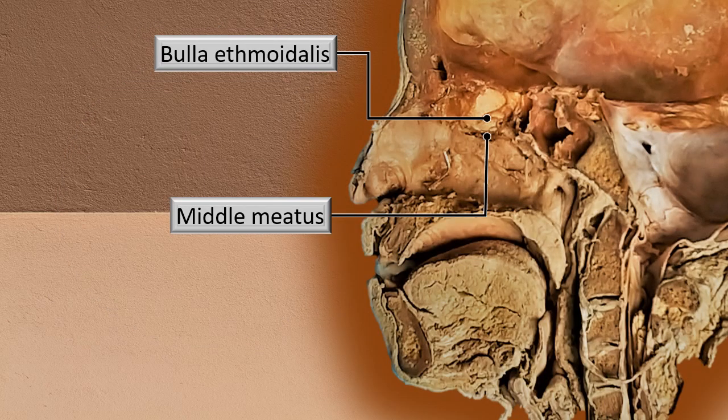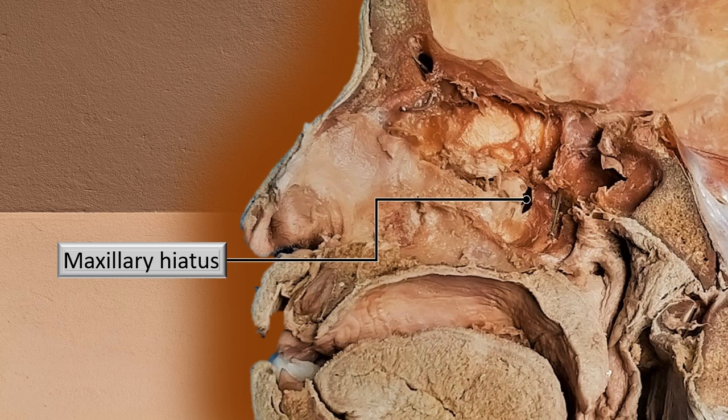The middle meatus and its details are now shown. On the lateral wall of the middle meatus, right below the middle concha, there is an elevation called the bulla ethmoidalis. That bulge is due to the ethmoidal sinus located deep to it. A little behind the bulla you can see the maxillary hiatus — the opening of the maxillary air sinus. Remember, although the air sinus is located quite below, the opening appears a little higher up.